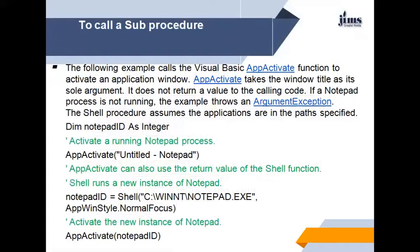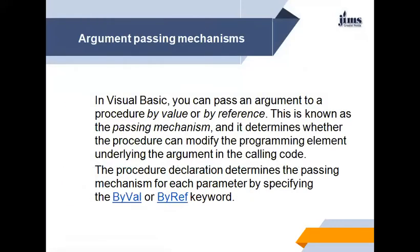Here we are defining Dim notepadId as Integer. Now, activate a running notepad process: AppActivate "Untitled - Notepad". AppActivate can also use the return value of the Shell function. Shell runs a new instance of notepad: notepadId equals Shell of notepad.exe with window style Normal Focus. Then AppActivate is called passing notepadId as the argument. In this way, it is running.